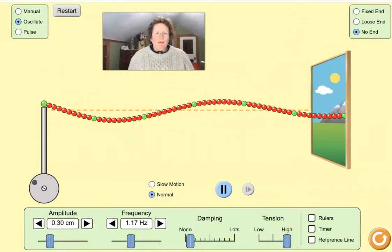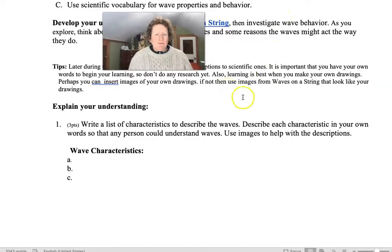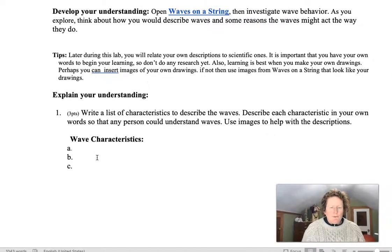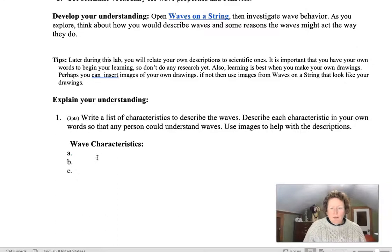Your job here for the first question is just to mess around with the simulation and describe three characteristics of waves. How big they are? How fast are they? What do they look like? And you can put in images if you want to help with your descriptions because sometimes a picture is worth a lot of words.